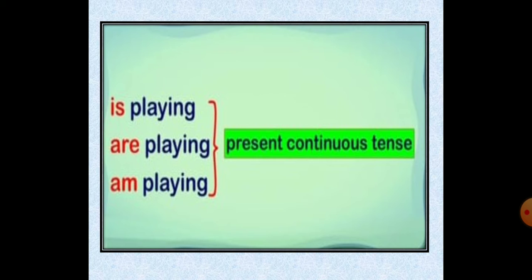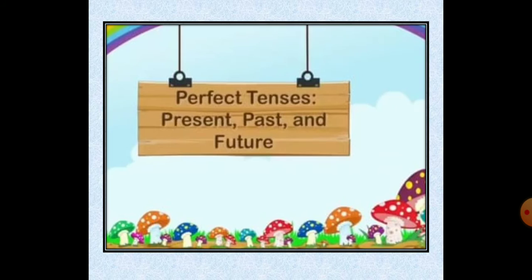In present continuous tense, teen helping verbs rakhna hai. Agar singular person hai — koi ladki ya boy — we put 'is' plus ing. If we have you, we, they, or more than one person, we put 'are' plus ing. And when we use 'I' as a subject, we put 'am' plus ing. So: is playing, are playing, aur am playing.